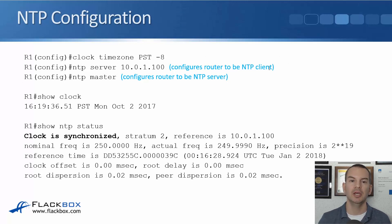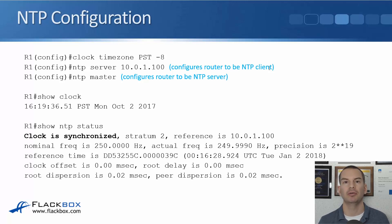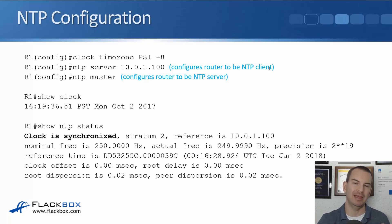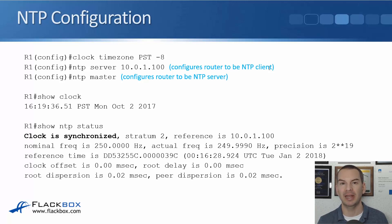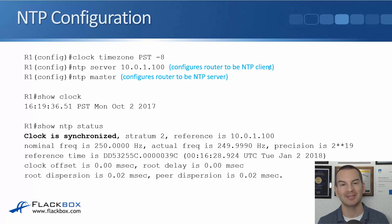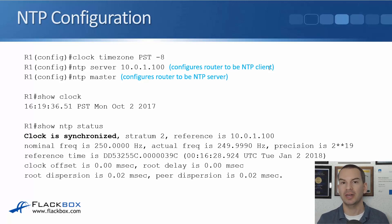For NTP configuration, first set the time zone on the router. If you've got a router in New York, set it for the New York time zone; if you've got a router in Sydney, set it for the Sydney time zone. In our example, the local time is PST in the US, which is eight hours behind UTC. So we say 'clock timezone PST -8' to say it's eight hours behind UTC. Then we configure where the NTP server is. To configure the router as an NTP client, the command is 'ntp server' followed by the IP address of the server. To configure it as an NTP server, the command is just 'ntp master'. Usually we'll have it configured as an NTP client with the 'ntp server' command — we don't usually use the router as an NTP master.